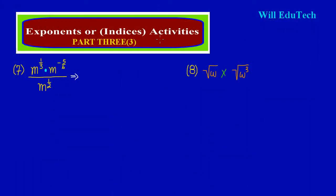Welcome back. In the previous video we looked at part 2 where we stopped at question 6, so we're just going to pick it up from there. In question 7, base m raised to the 1/3 is being multiplied by base m raised to the power of negative 5/6, and that is all being divided by base m raised to a half.